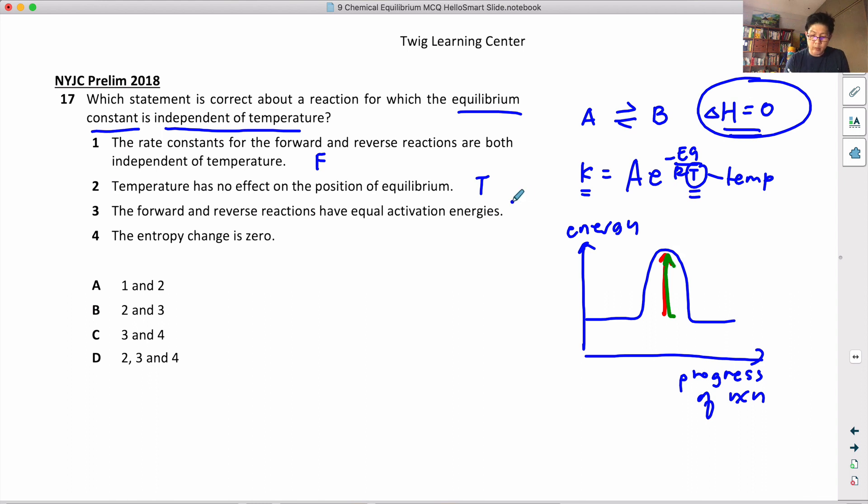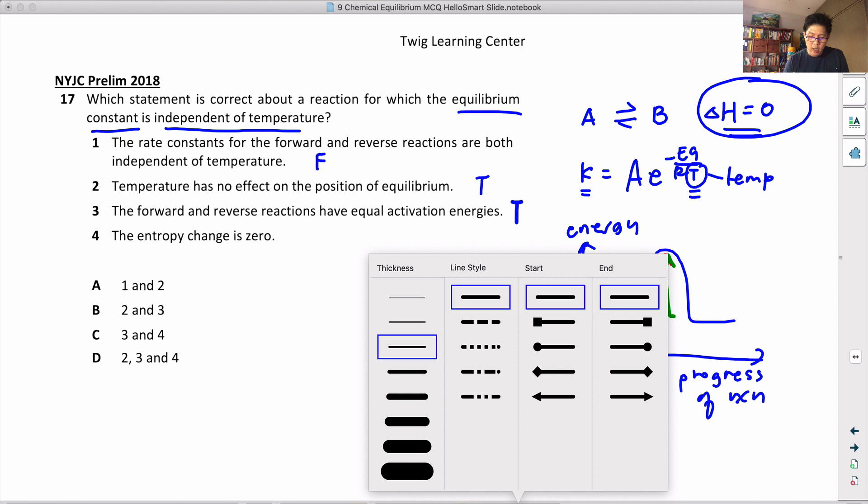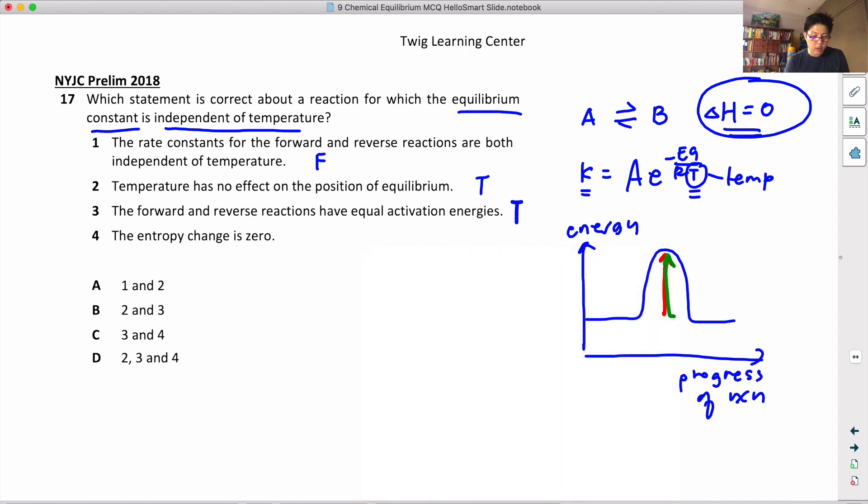Okay, next one: entropy change is zero. Entropy change - you can't tell from this part here, right? So I don't think you can tell anything about entropy change based on this, so I put false.